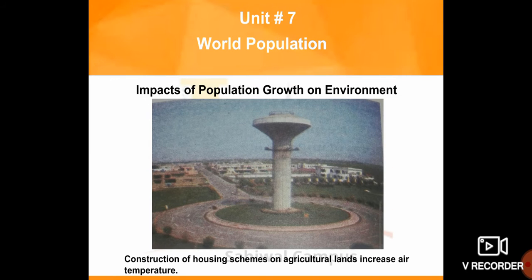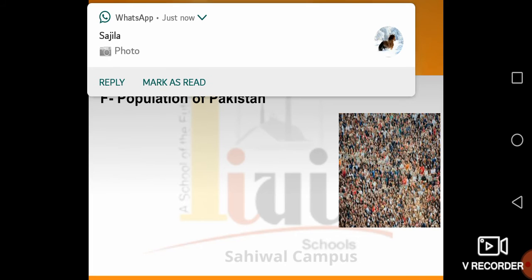Construction of housing schemes on agricultural lands increases air temperature. If we start to build houses on agricultural lands, the air temperature will increase. This is also a result of population growth on the environment.